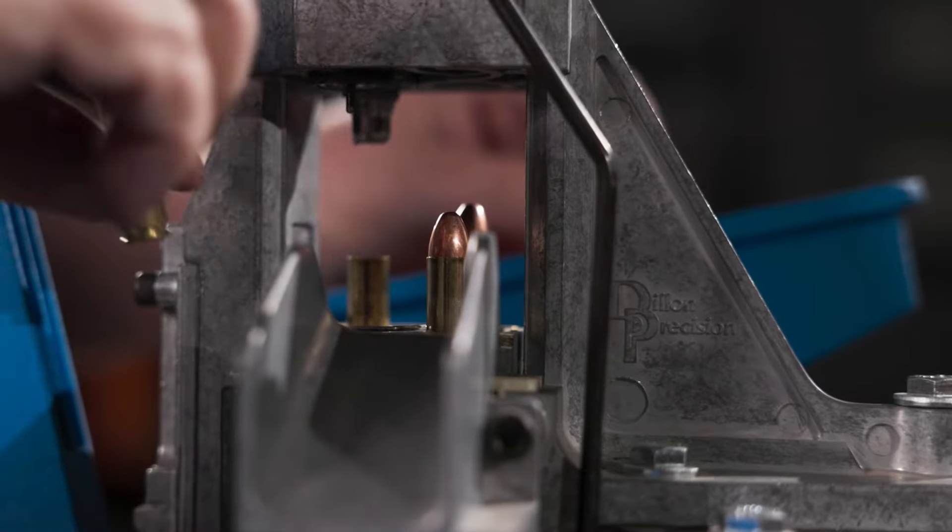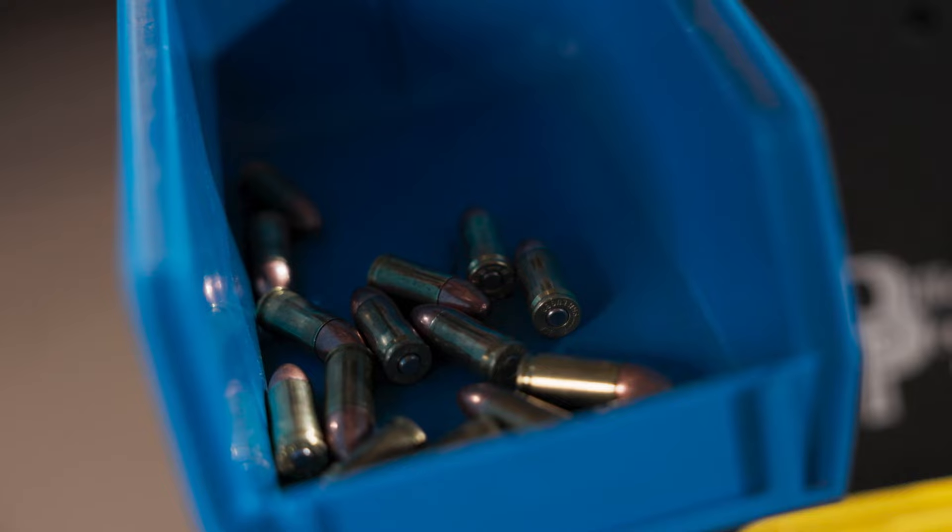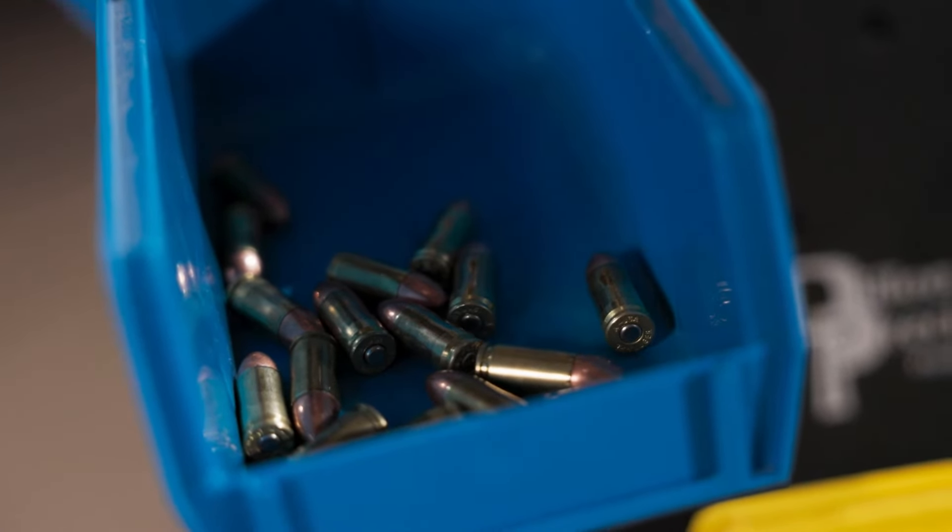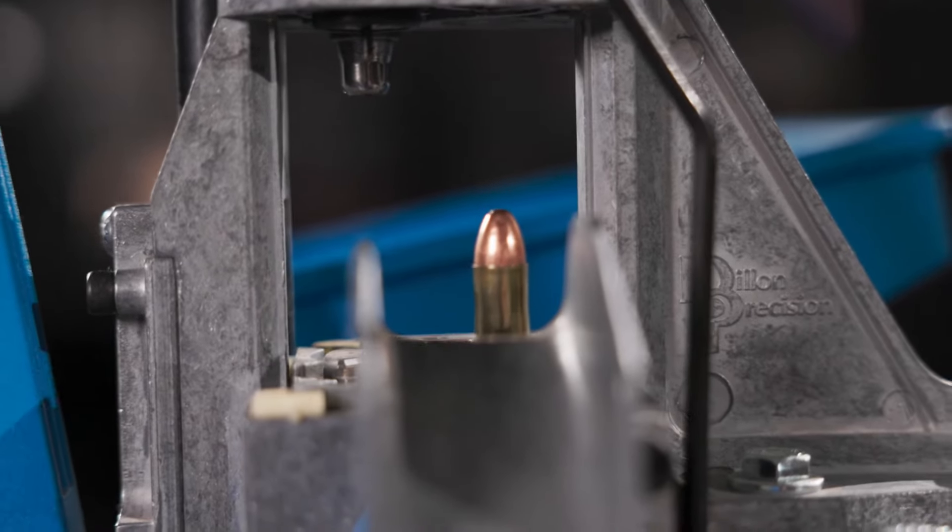In comparison, the Square DLB is suitable only for common handgun cartridges, and on the Square DLB the shell plate is mechanically advanced by cycling the handle.